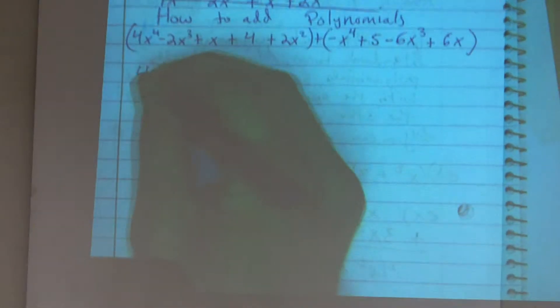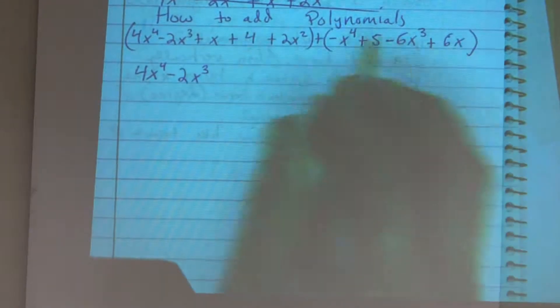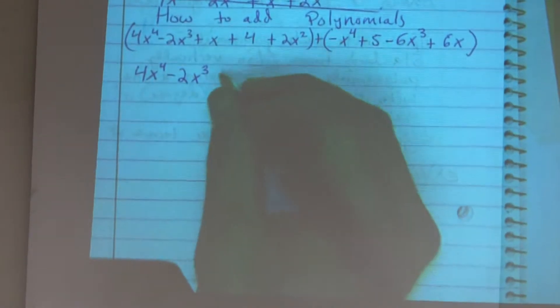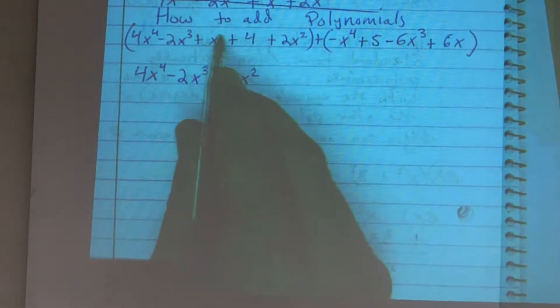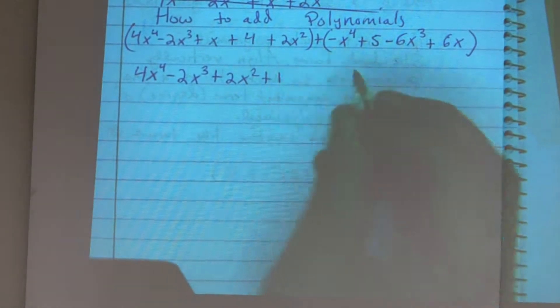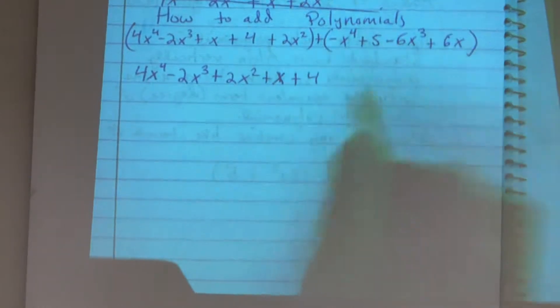So the first thing I'll have is 4x to the fourth minus 2x cubed. Now x squared would be my next exponent, so I'm going to write that. And then my x to the first would be my next exponent, plus x. And then my 4 is my constant, which we always write at the end.